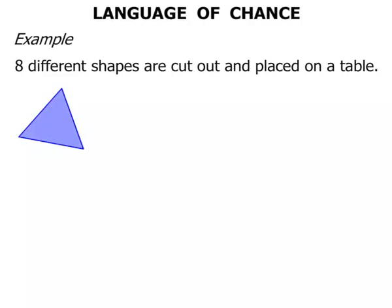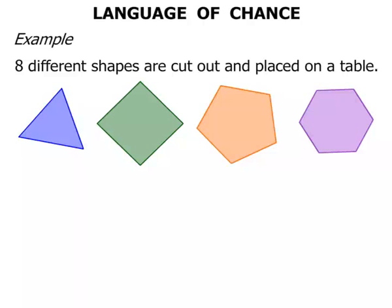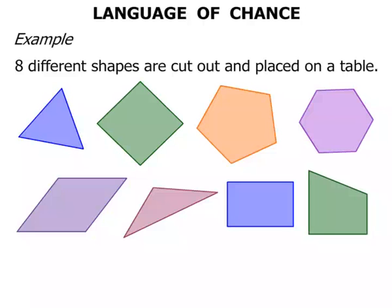We've got a triangle, a square, a pentagon (it's got five sides), a hexagon (it has six sides), a rhombus (that's where all the sides are the same), another triangle, a rectangle, and a trapezium.